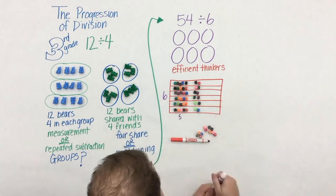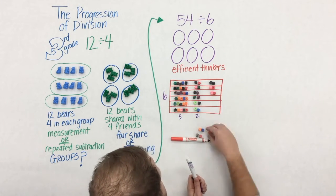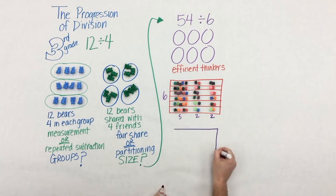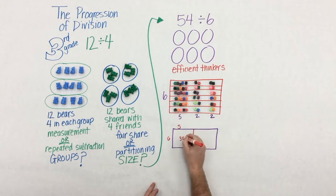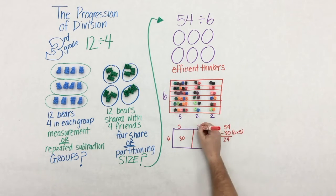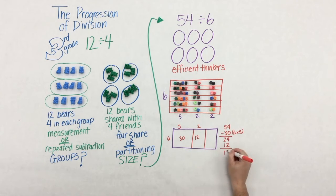Then with their remaining pieces, they might put two in each group, and so on. So within each group of six, they've placed a group of five, a group of two, and another group of two. So when you take 54 and you divide it into six groups, you get nine in each group.